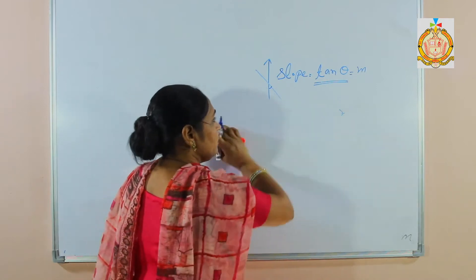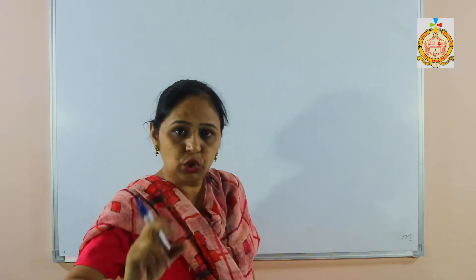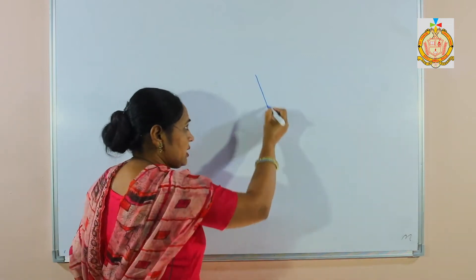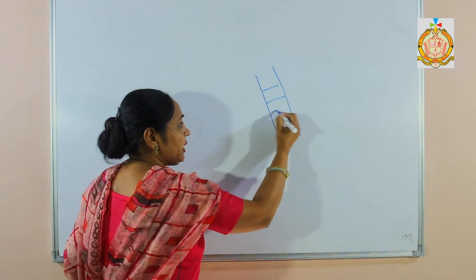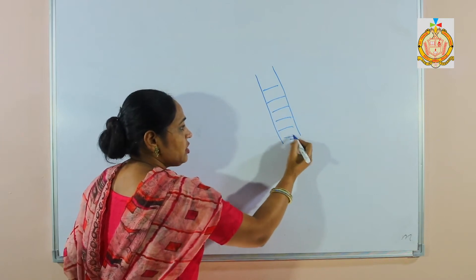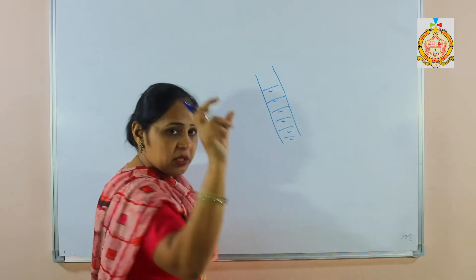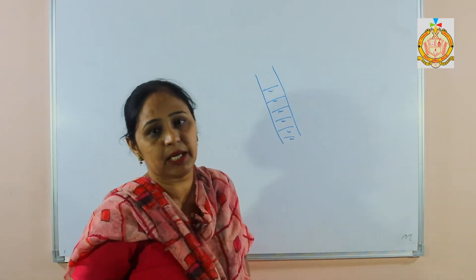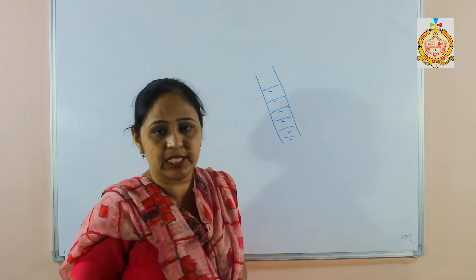The next point is parallel lines and perpendicular lines. Parallel lines are always at equal distance from each other — if this distance is 2, it is always 2 every time. Parallel lines never meet and never intersect.